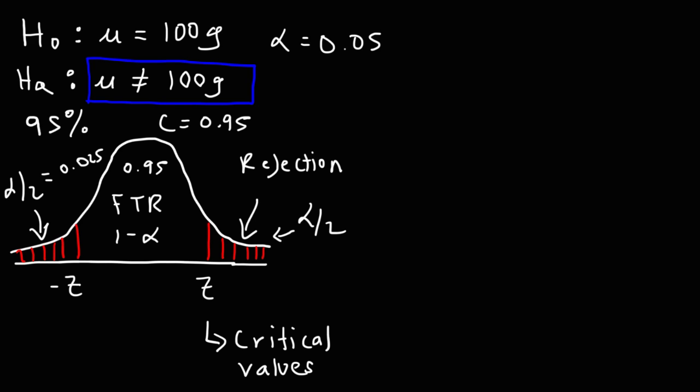To determine whether you should reject or not reject the null hypothesis, you need to calculate the z-value and compare it to the critical value. This calculated z-value, call it z_c, is the test statistic. If that z-value is greater than the critical value, it falls in the rejection region and you should reject the null hypothesis. If the z-value is not in the shaded region, then you should not reject the null hypothesis.